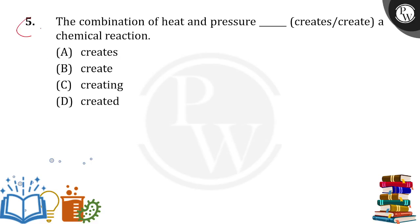Your fifth question is the combination of heat and pressure dash of chemical reaction. What is the combination word? Combination means — there are two things of combination, but combination appears plural, yet it is singular.